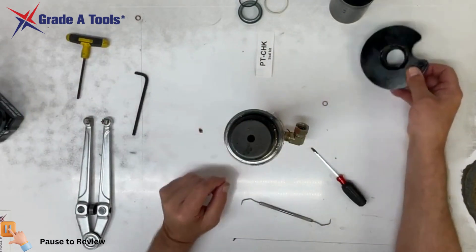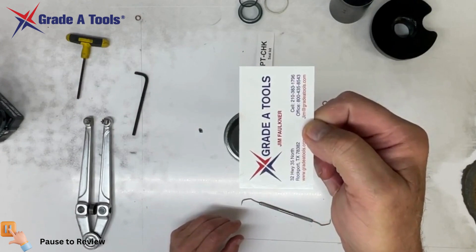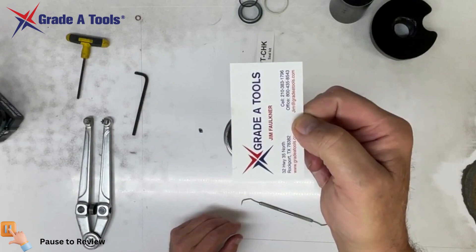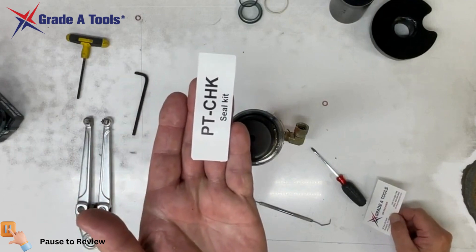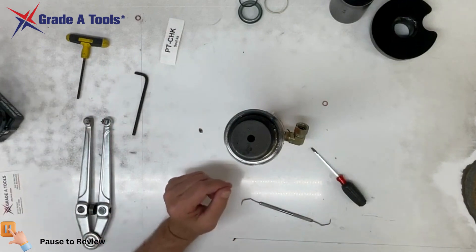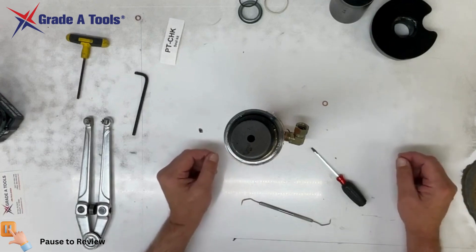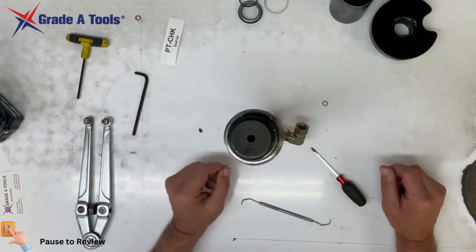If you have any questions, these people at Grade A Tools are excellent at answering your questions. They'll FaceTime you, they'll help you with whatever you need. The seal kit for this is the PT-CHK. We will list the cylinders that this will work on. If you have any questions, don't make a mistake. Call us, contact us. We'll be happy to make sure that you get the right seal and the right repair. We are here to make your job easier. Thank you for watching, have a great day.